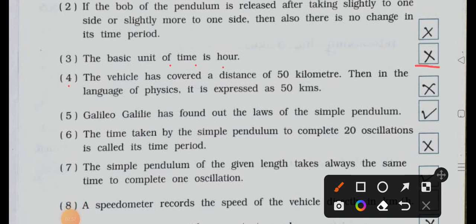Now see number three: the basic unit of time is hour. It's wrong, false. Number four: the vehicle has covered a distance of 50 kilometer, then in the language of physics it is expressed as 50 kilometers. So it's wrong, false.